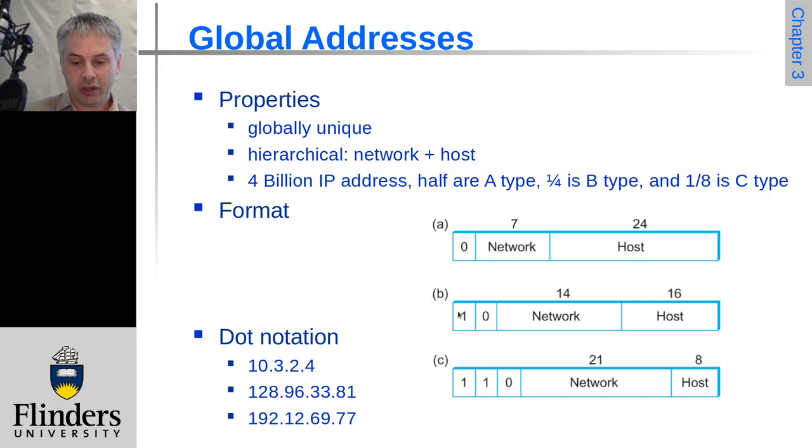A class B address has a 1 and a 0 in the first two bits, and then 14 bits of network and then 16 bits of host. So this means it will be where the first byte is between 128 and 191.